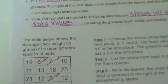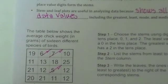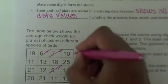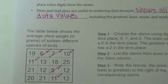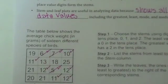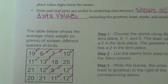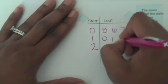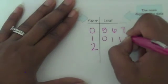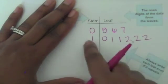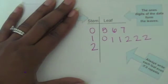Next, go to digits with a 1 in the tens place. We've got one 10, two 11s, three 12s, a 13, an 18, and a 19. So next to stem 1, we write: 0 for the 10; then 1, 1 for the two 11s; then 2, 2, 2 for the three 12s; then 3 for 13; 8 for 18; and 9 for 19. Remember, always write each leaf even if it repeats.